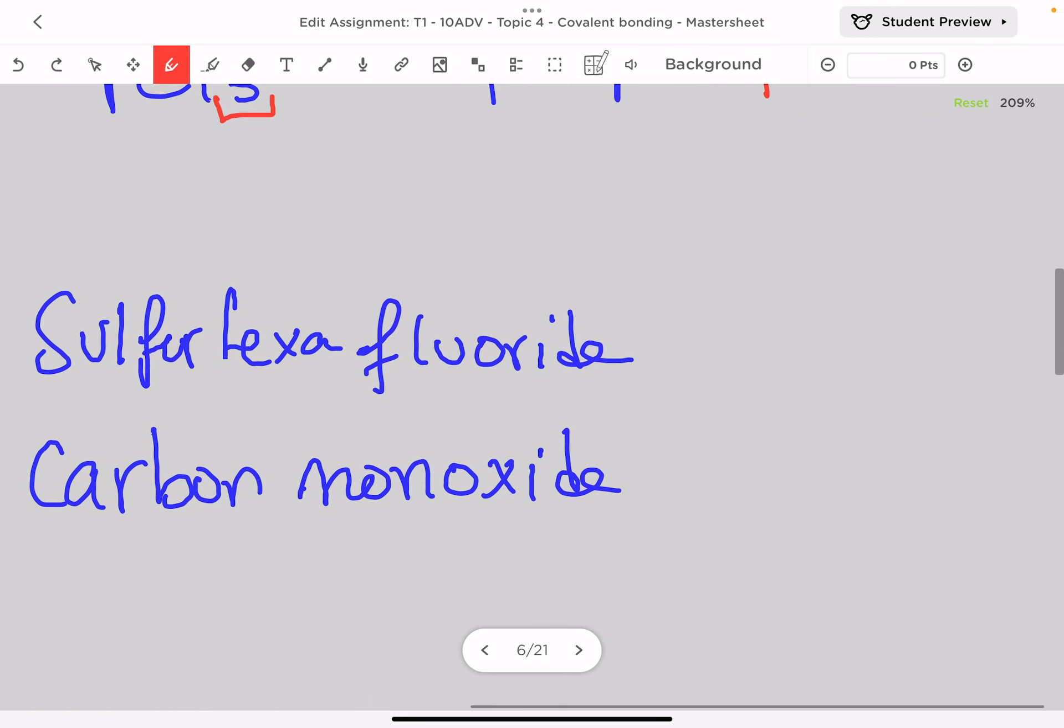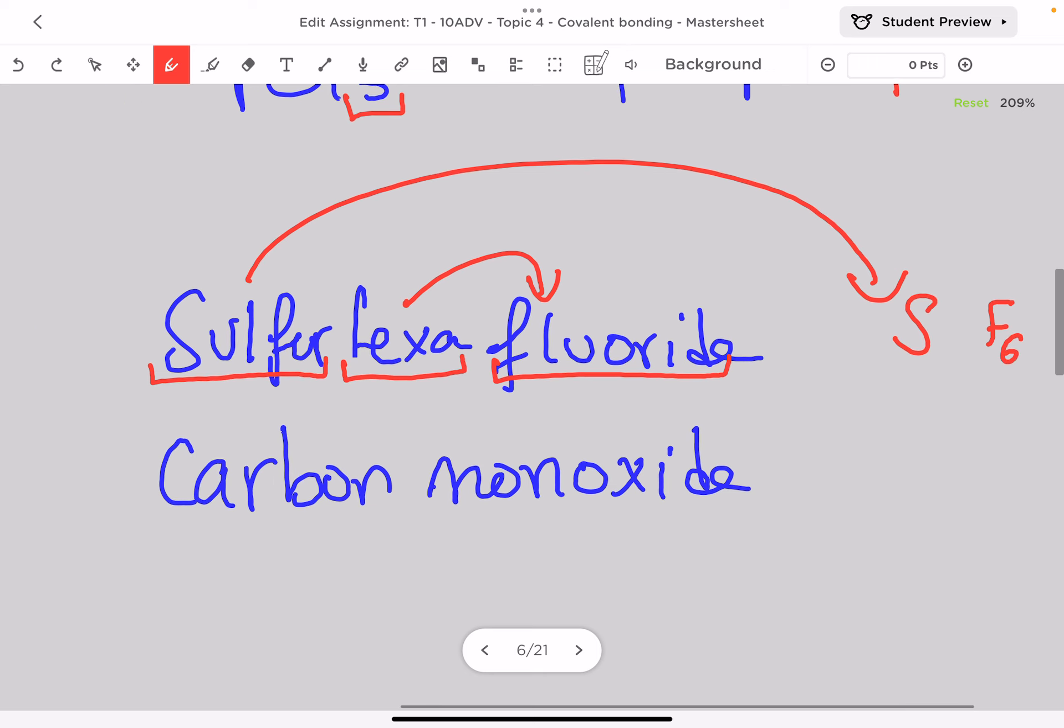Now let's do the opposite and take the name to write the formula. Sulfur hexafluoride: sulfur is S, fluoride is F. The hexa is attached to the fluoride and hexa means six. Since there is nothing before the sulfur, it means I have one sulfur, and SF6 is the final formula.